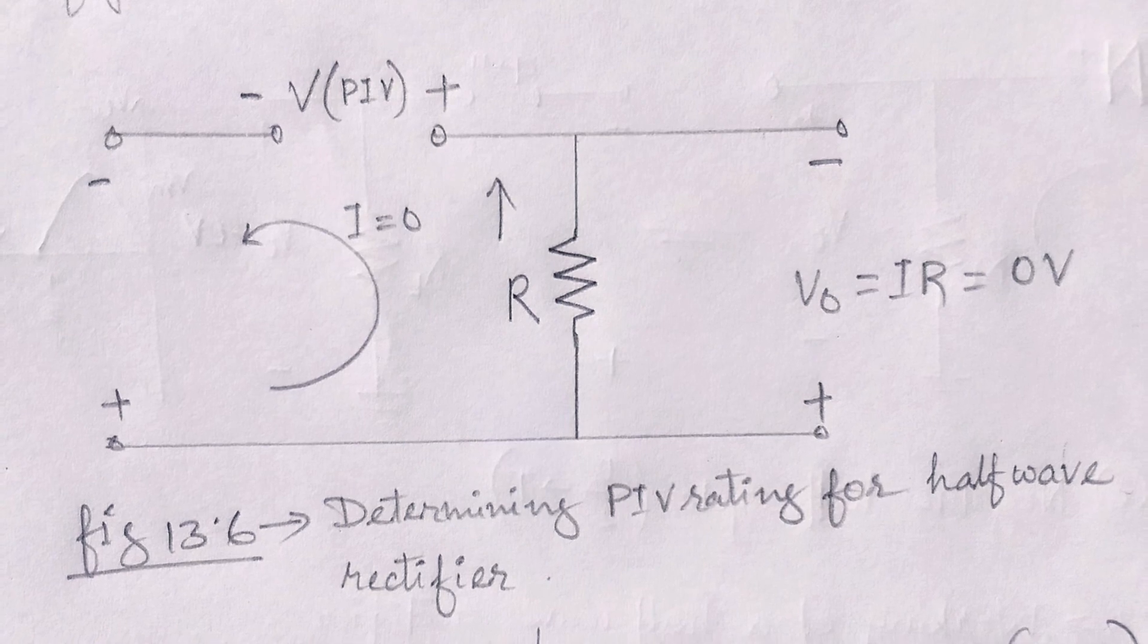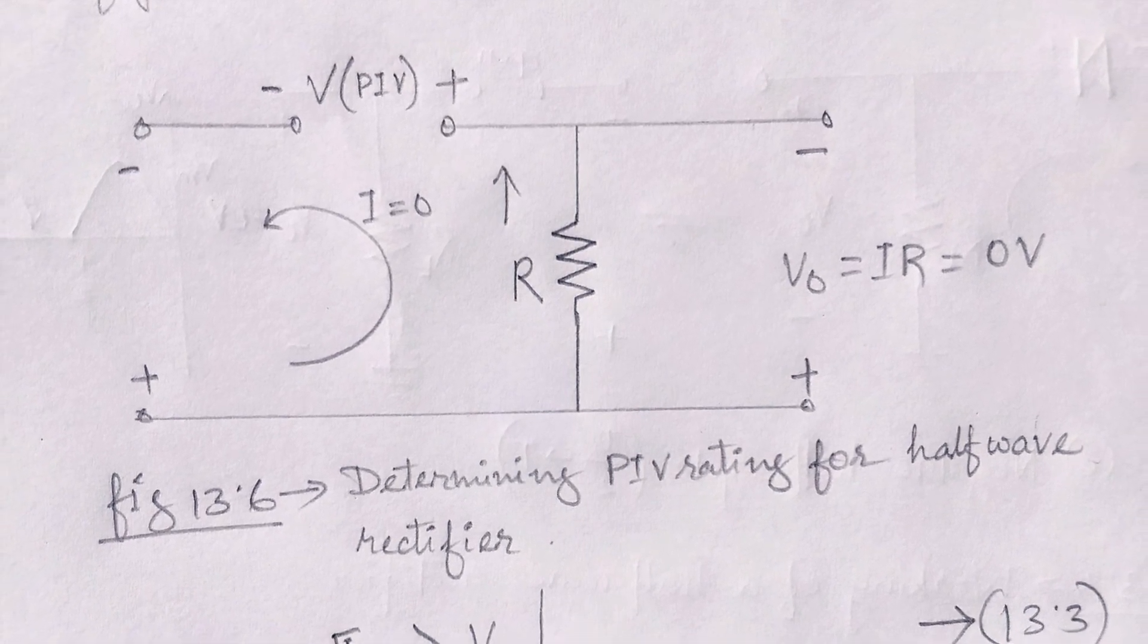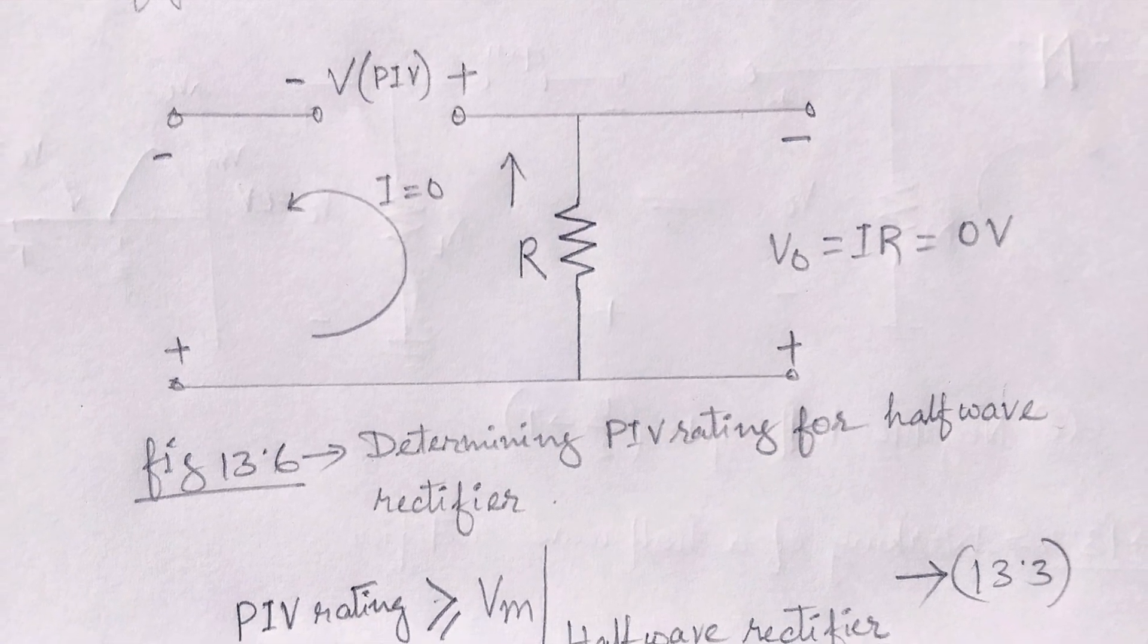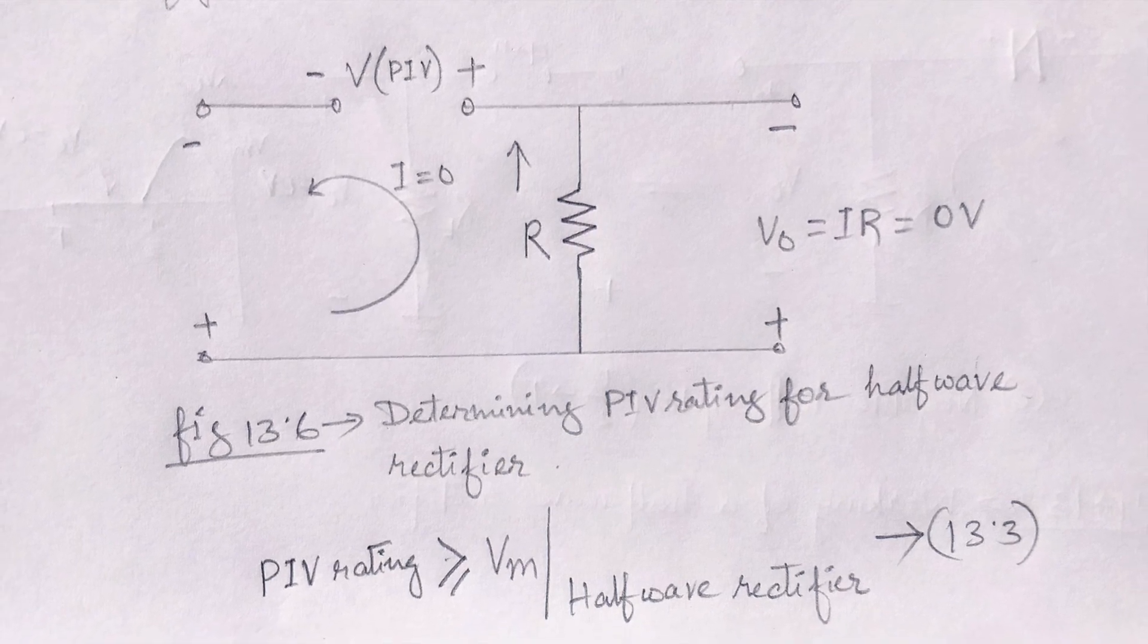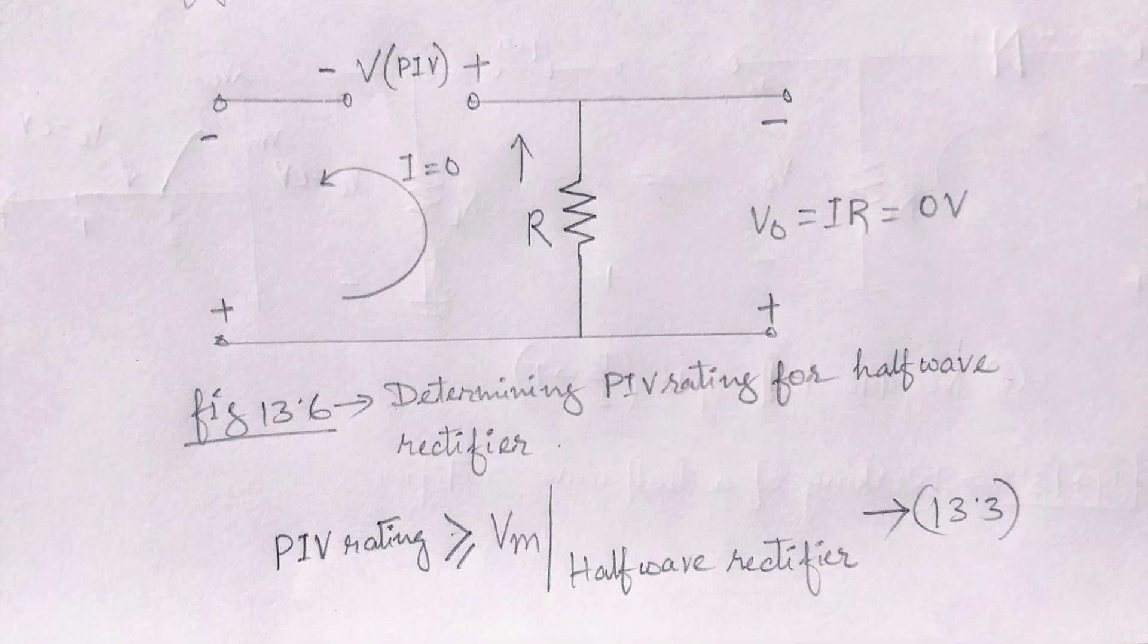The required peak inverse voltage rating for the half wave rectifier can be determined from this equation 13.3. It is clear that peak inverse voltage rating of the diode must be equal to or greater than the peak value of the applied voltage Vm.